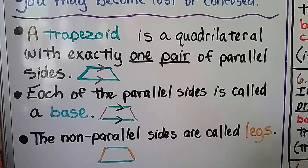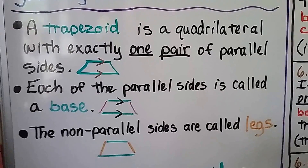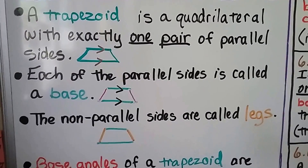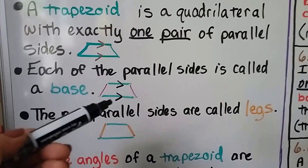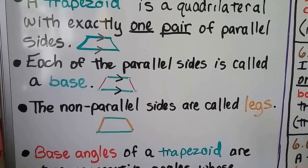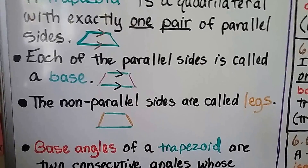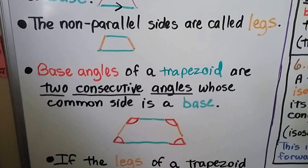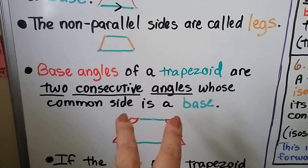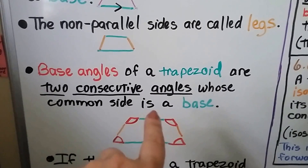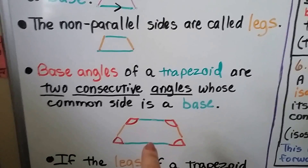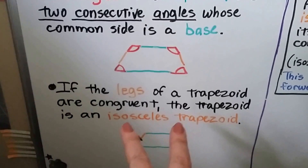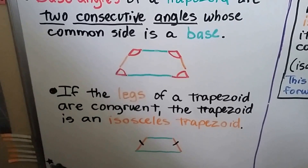A trapezoid is a quadrilateral with exactly one pair of parallel sides. The top and bottom parallel sides are each called a base — base one and base two. The non-parallel sides are called legs. Base angles of a trapezoid are two consecutive angles whose common side is a base. If the legs of a trapezoid are congruent, it's called an isosceles trapezoid.